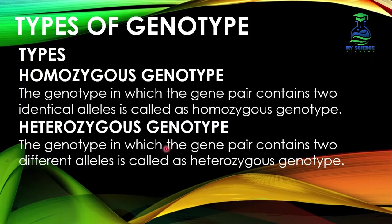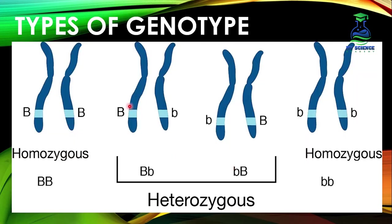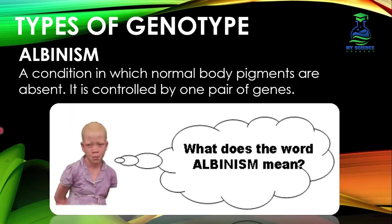What is heterozygous genotype? Heterozygous means having different alleles of a gene pair. The genotype in which the gene pair contains two different alleles is called heterozygous genotype. As can be seen in the diagram, the gene pair has two different alleles — capital B and small b — so these are the heterozygous genotypes. Genotype is a set of genes responsible for determining a specific trait in any individual.